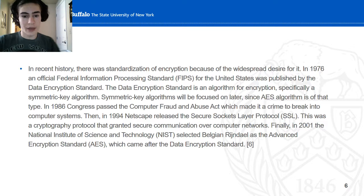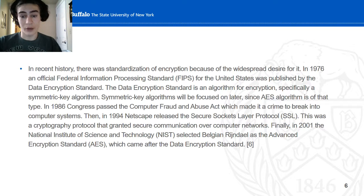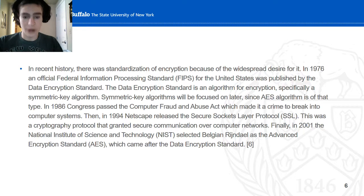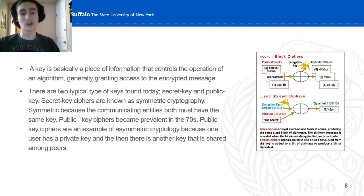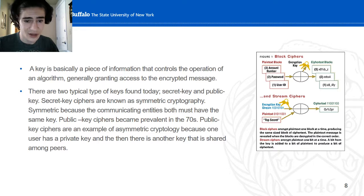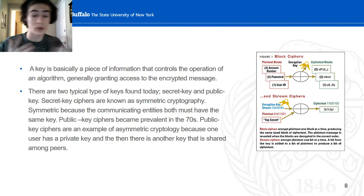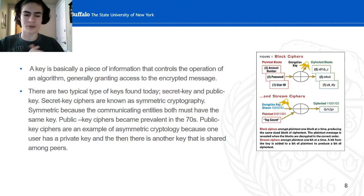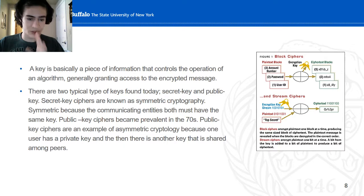In recent history, FIPS — the Federal Information Processing Standard — published an encryption standard, which is an algorithm for encryption, specifically symmetric key encryption. The key is basically a piece of information that controls the operation of an algorithm, ultimately granting access to the encrypted message. There are two types of keys: secret key and public key. Secret keys are known as symmetric cryptology, because both entities have the same key. Public key cryptography was prevalent in the 70s, where asymmetric cryptology is not as secure as secret keys.